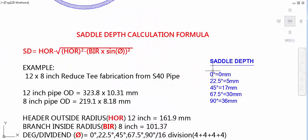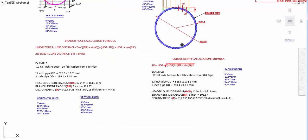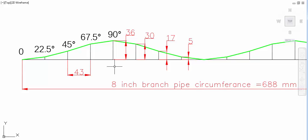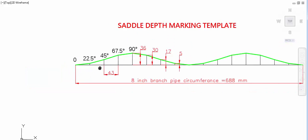Okay, then how to mark the saddle depth in pipe? Take one pipe and calculate the circumference. For example, our branch pipe is 8 inch, so circumference 688 mm divided by 16 divisions, so 680 divided by 16 means you will get 43 mm. So equally divide as 43 mm.